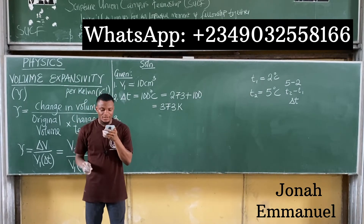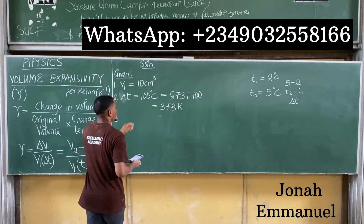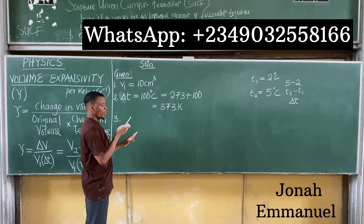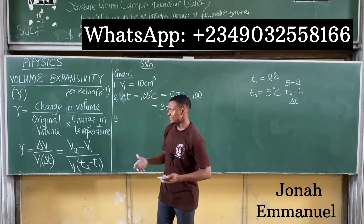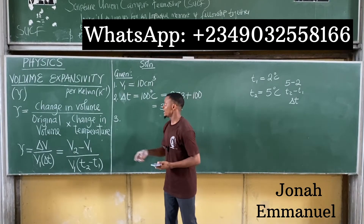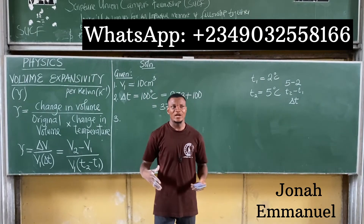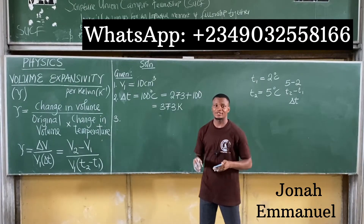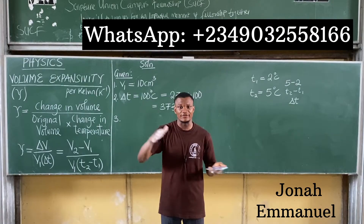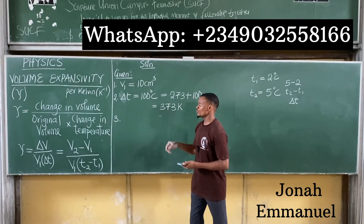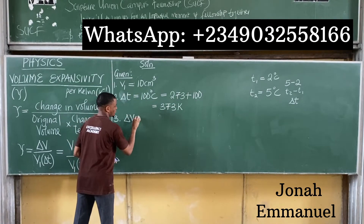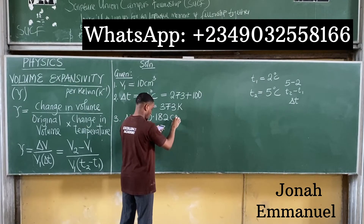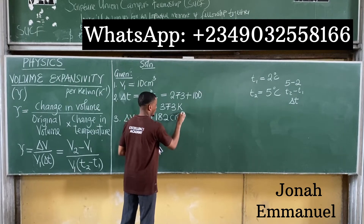The question says the increase in the volume of mercury when the temperature rises is 0.182 cm³. Since we already have the initial volume as 10 cm³ and volume is increasing, the final volume must be larger — so 0.182 cm³ is not V2. It is actually the change in volume ΔV, meaning V2 − V1 equals 0.182 cm³.